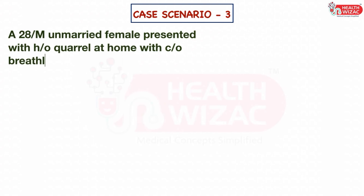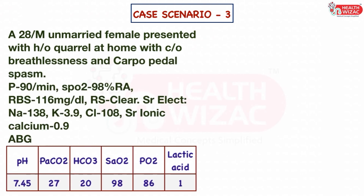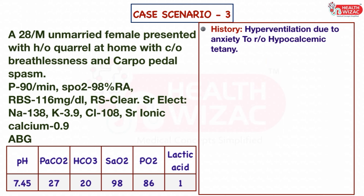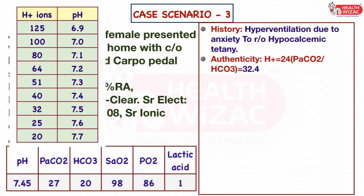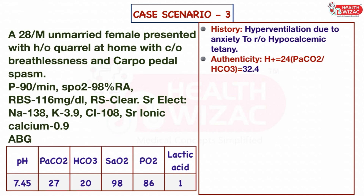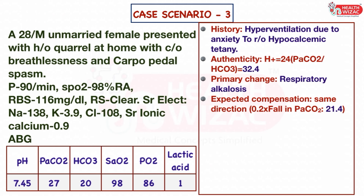Case Scenario 3: A 28-year-old unmarried female presented with history of quarrel at home, complaints of breathlessness and carpopedal spasm. Hemodynamic parameters, serum electrolytes, and ABG are shown. Step 1 — history is suggestive of hyperventilation due to anxiety; also to rule out hypocalcemic tetany. Step 2 — calculated H+ ion value is 32.4, which matches the pH range; sample is authentic. Step 3 — primary change is respiratory alkalosis. Step 4 — calculated fall in bicarbonate is 21.4, which nearly matches the bicarbonate value of the given ABG sample.